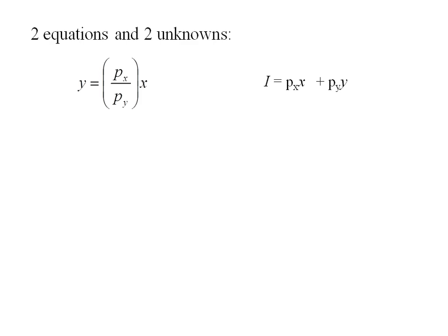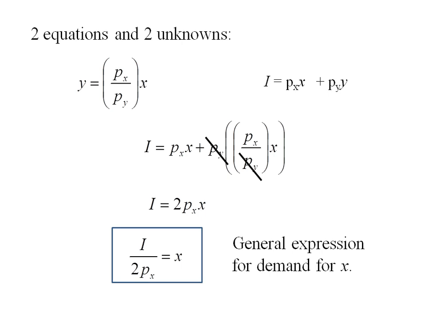Now we've got two equations and two unknowns, so I can substitute in for y and solve for x. It looks a little ugly at first, but what we'll notice is those py's cancel right out. So I've really got px times x plus px times x, or I equals 2 times px times x. Dividing, I get I divided by 2px is x, and this is my general expression for the demand for x.